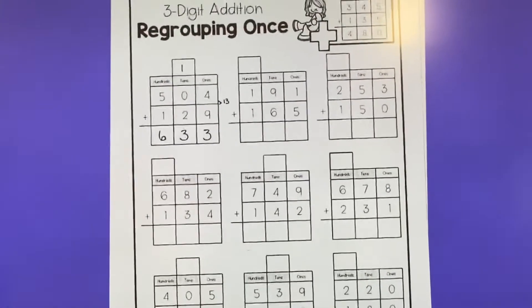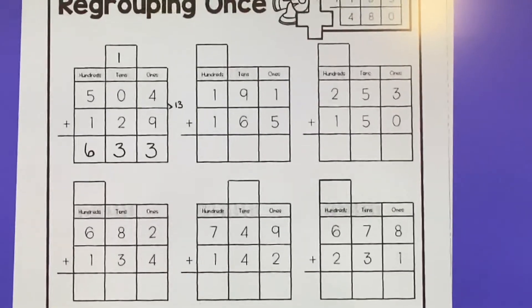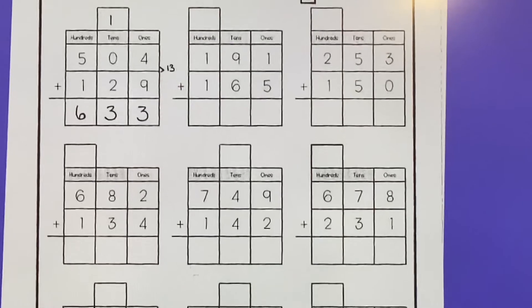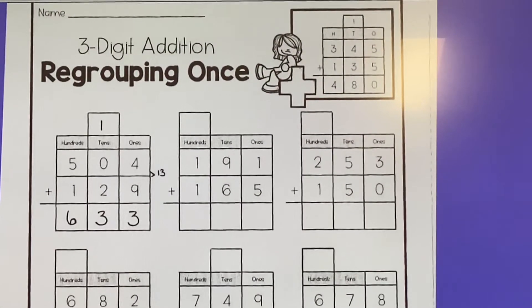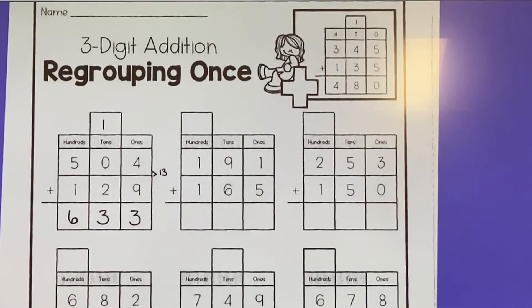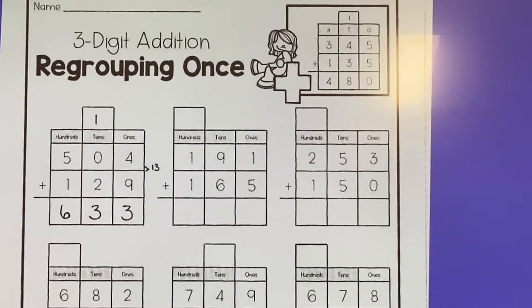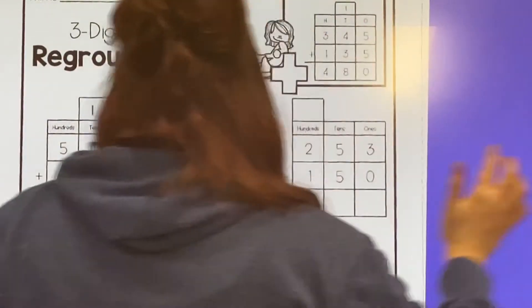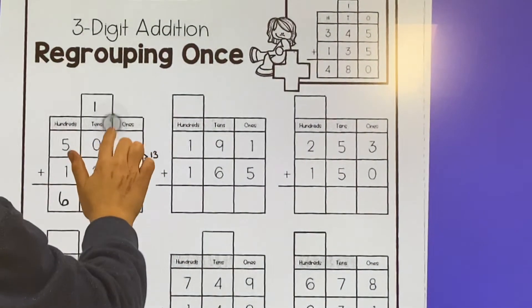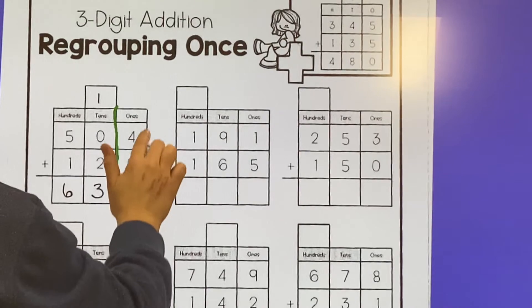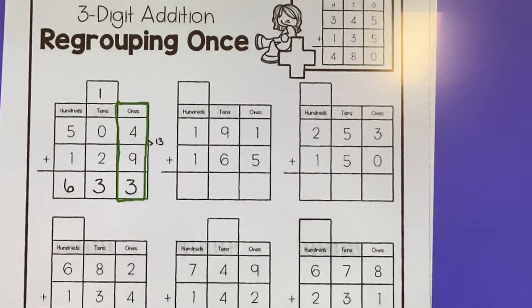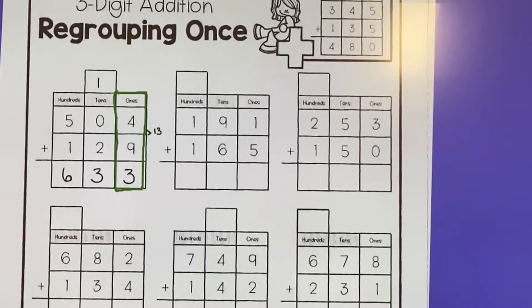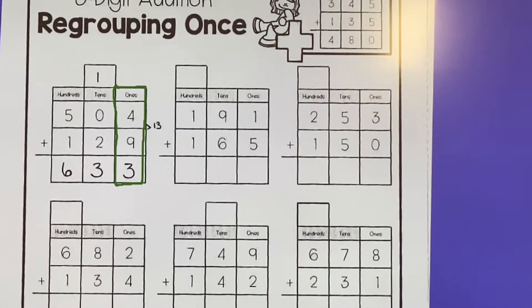Okay, on the next page, we're doing three digit addition with regrouping and we're only doing it one time. So you'll notice that you have the boxes, the ones, tens and hundreds to help you out. We're going to remember that you always start in the ones place. So everyone is going to start right here in the ones place. We have an example done for you.